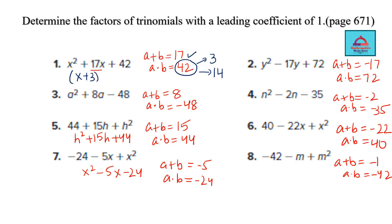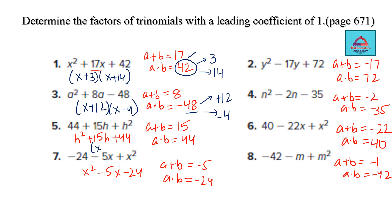The best way to find the two numbers is to factor the constant c. For c = 42, which two numbers multiply to 42 and add to 17? That's 3 and 14: 14 × 3 = 42 and 14 + 3 = 17. So the factors are (x + 3)(x + 14). For product −48 and sum 8, use −12 and 4, giving (x + 12)(x − 4).